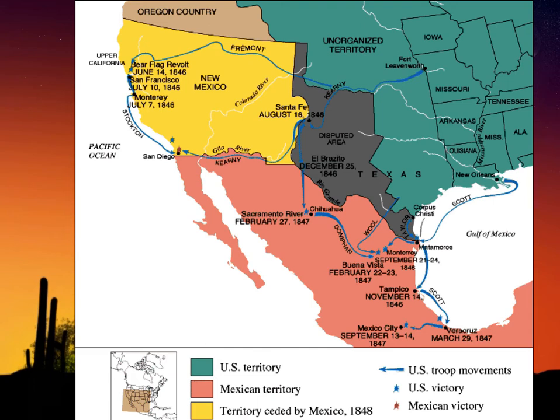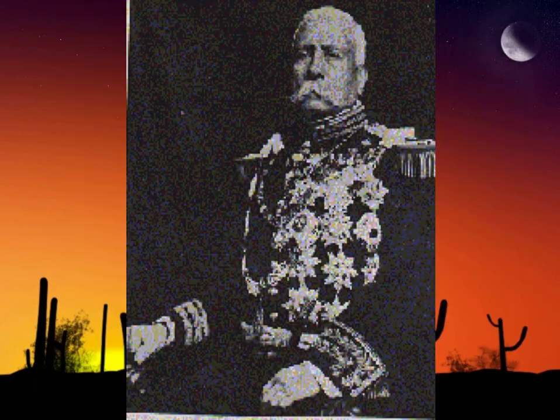The man ruling Mexico leading up to the revolution was Porfirio Díaz. He ruled Mexico from 1876 until the beginning of the Mexican Revolution in 1910. This was very much a conservative, centralized government supported by the army, foreign capitalists, and large landowners.